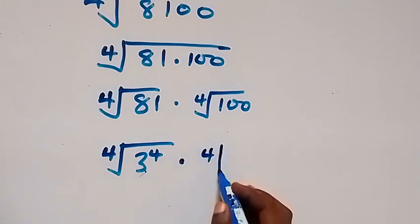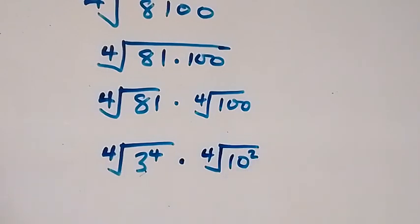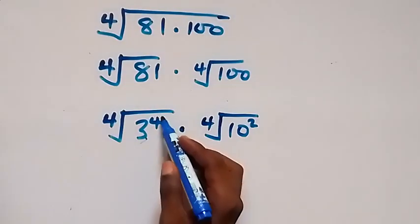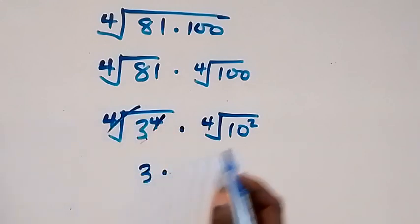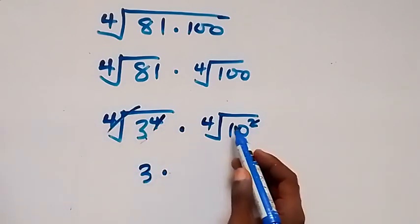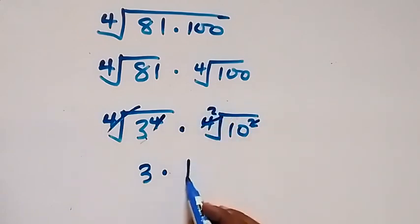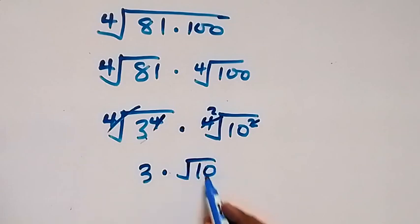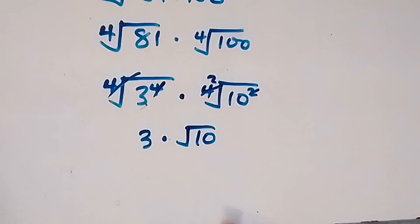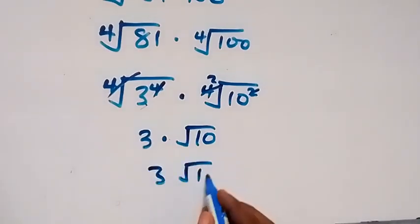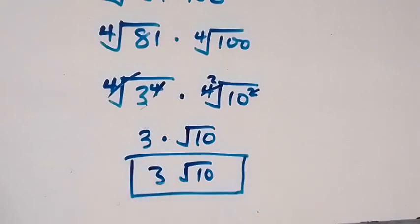We can also write the fourth root of 100 as the fourth root of 10 squared, since 10 squared is 100. The power 4 cancels with the fourth root, leaving us with 3. Then the fourth root of 10 squared: the 2 goes over the 4, giving us the square root of 10. So we now have 3 multiplied by root 10, which is the same as 3 root 10 — the simplified form of the given problem.